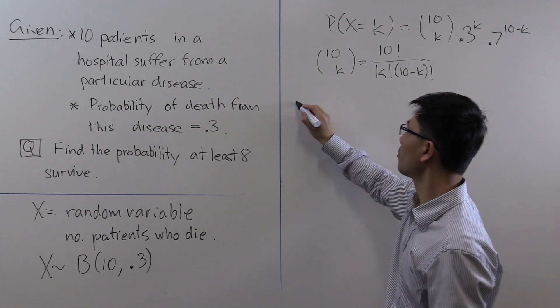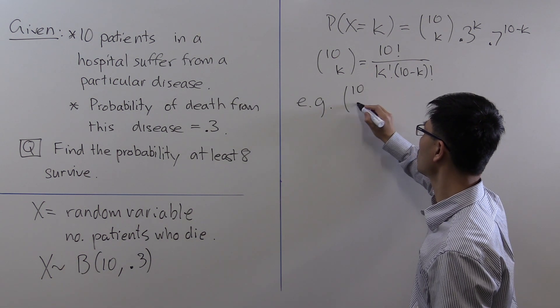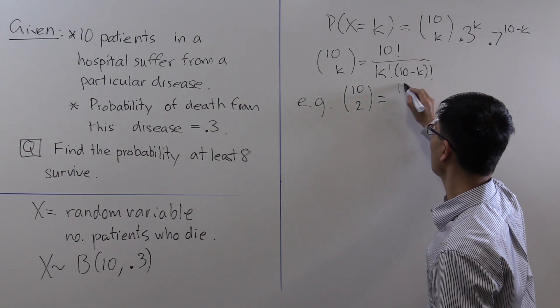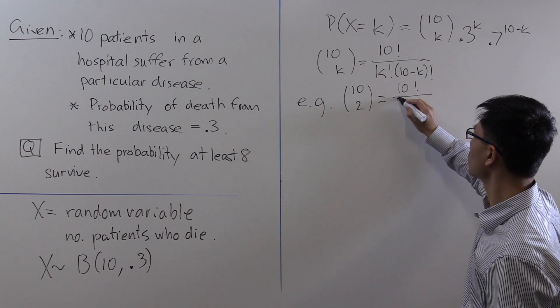Let's do a little example so you remember how to calculate this quickly. 10 choose 2 is equal to 10 factorial divided by k equals 2, so 2 factorial, and 10 minus 2 which is 8 factorial.